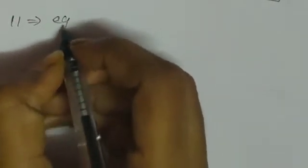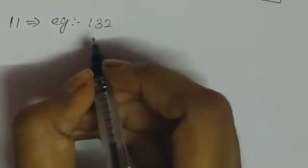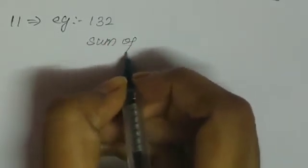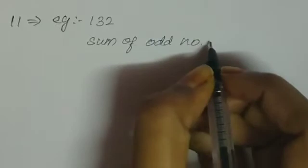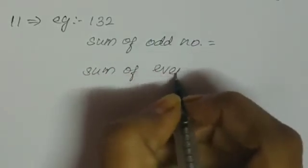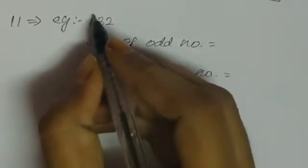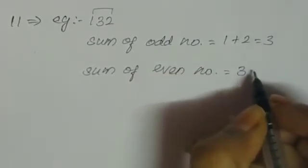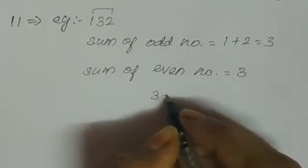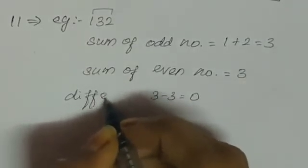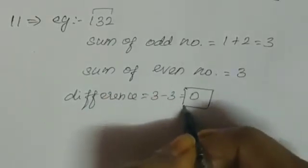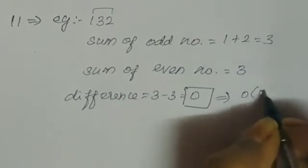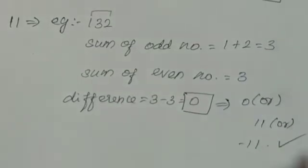Next, 11. This is a little bit different. For example, 132. First, sum of odd place digits: 1 plus 2 gives 3. Even place has only one number: 3. Next step: find the difference between odd and even digit sums. The difference is 0. If the result is 0, 11, or minus 11, then the number is divisible by 11.